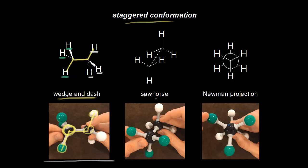Our next way to represent the staggered conformation is what's called a sawhorse drawing. This carbon is the front carbon, and it has three hydrogens in green attached to it. We also have this carbon-carbon bond on our sawhorse drawing, and then finally the carbon in the back has the three hydrogens in white. If we look down the carbon-carbon bond along this axis, imagine putting your eye right here and looking down this axis, you will see the Newman projection, just like we saw in the video.